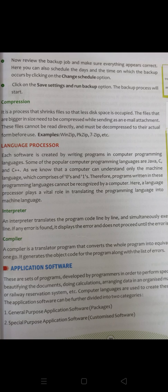System software mein operating system, utility program ke baad last part hai language processor. Hamein pata hai ki computer jo hai, it can't understand our language. Hamari language ko woh samajhta hi nahi hai, aur ye keval zero or one ki language samajhta hai — that is the binary language. Aaj kal ke time pe bahut high level ki languages jaise ki C++, Java, C etc. hain. Ye wali languages computer to samajhta nahi hai, to computer usko apne codes mein change karta hai. Iske liye ek language processor ka hona bahut zaroori hai jo usko machine language mein change kar sake — yaani ki zero or one ki language mein change karke computer ko usko samjha sake.